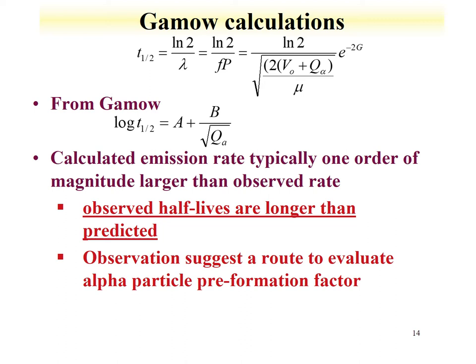One thing about these equations is that the calculated emission rates are typically larger than the observed rates, meaning the observed half-lives are longer than predicted. This difference can be used to evaluate a preformation factor. This model describes the decay of an alpha particle if the alpha particle always exists in the nucleus. The fact that observed half-lives are longer than predicted gives us a factor that says the alpha particle is not always pre-formed in the nucleus.